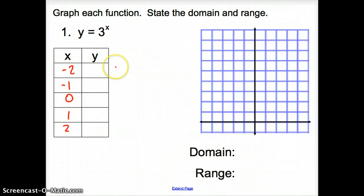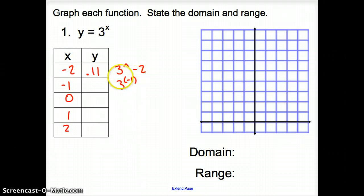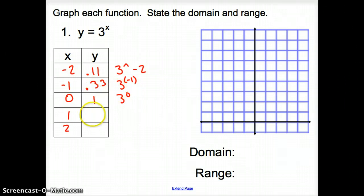Now when we plug this in, all you have to do is plug it into your calculator: 3, then hit the caret button or your exponent button, to the negative 2nd. That gives us 0.11. Or 3 to the negative 1st, which is 0.33. Then 3 to the 0 is 1, 3 to the 1st is 3, and 3 to the 2nd is 9.